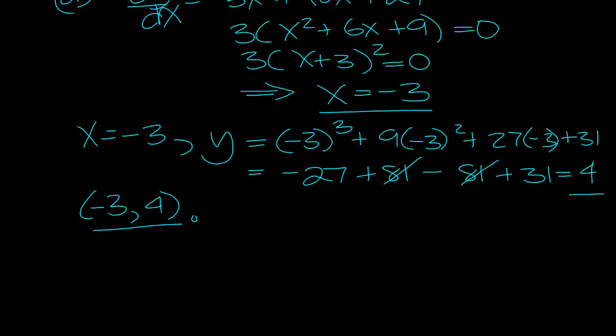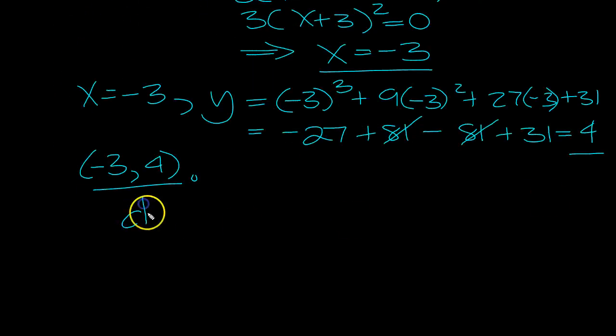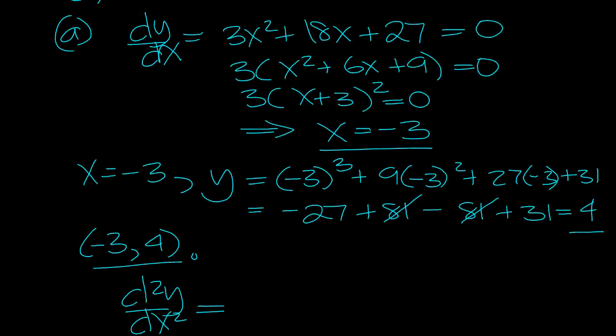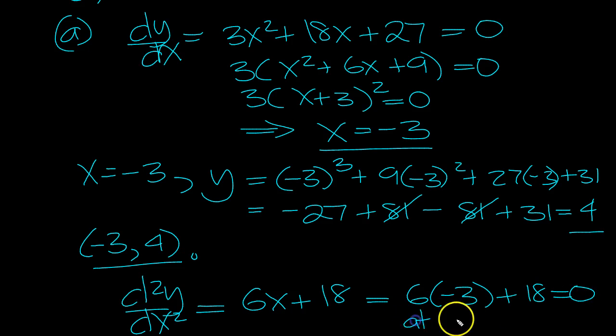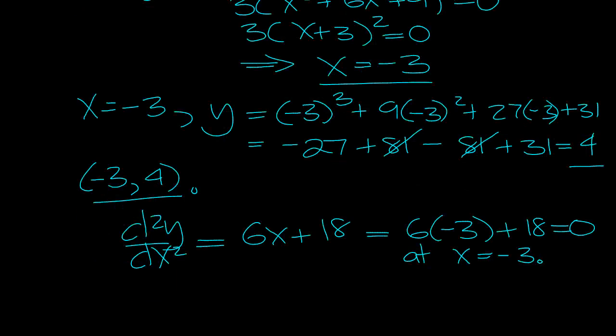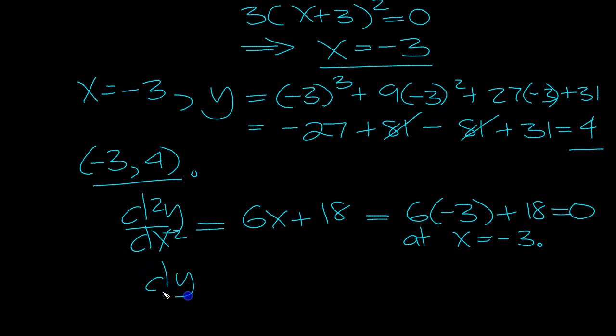Okay, so verify it's a point of inflection. Do d²y/dx² then. Let's have a look at that: 6x + 18, which equals 6(-3) + 18 = 0 at x = -3.